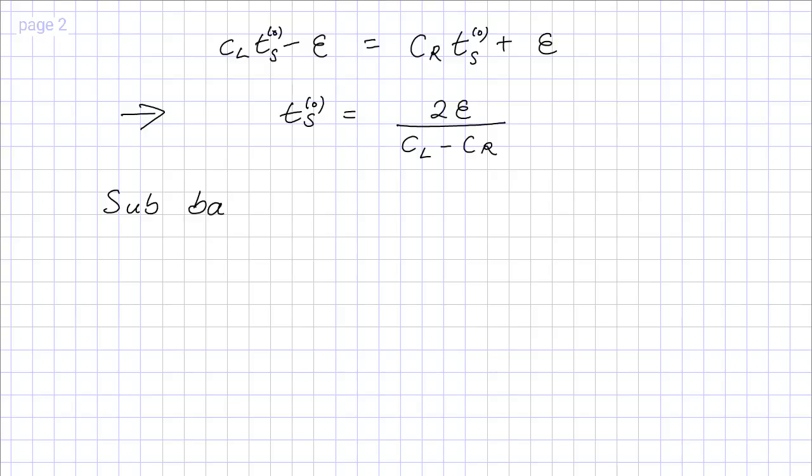To get the position, I now know T_S of zero. So I sub this back into, well, I could take either of these expressions for the characteristics. This is the one on the left. So I pop this value for the time in here and rearrange. And this gives me, X sub S zero equals epsilon times the sum of the two velocities divided by their difference.